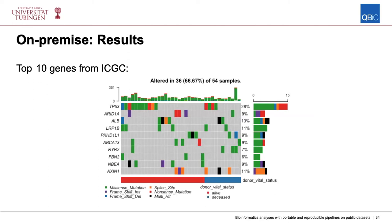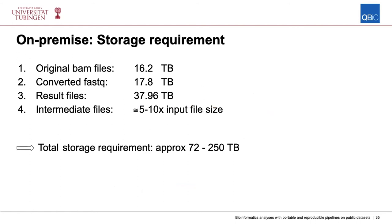We also looked at the top 10 mutated genes as reported by ICGC and compared them to our results. We're happy to report similar results for these 10 genes. There are small discrepancies, which we attribute to the fact that ICGC used three different pipelines and performed a consensus call, then annotated using different tools.